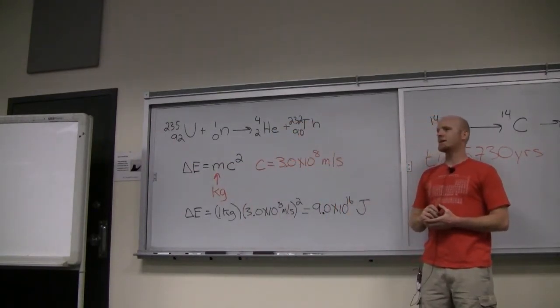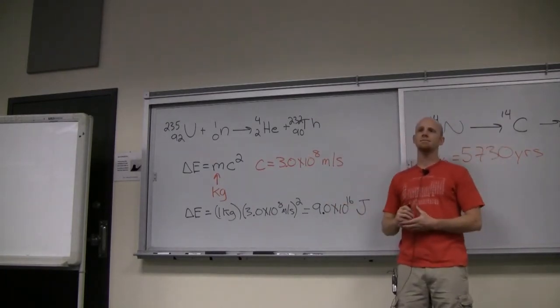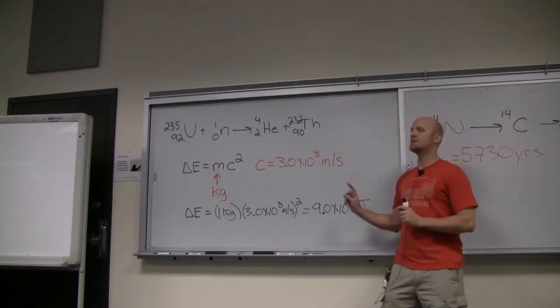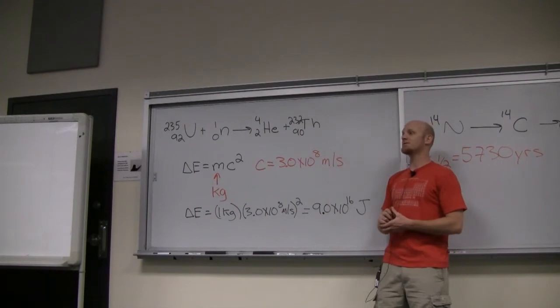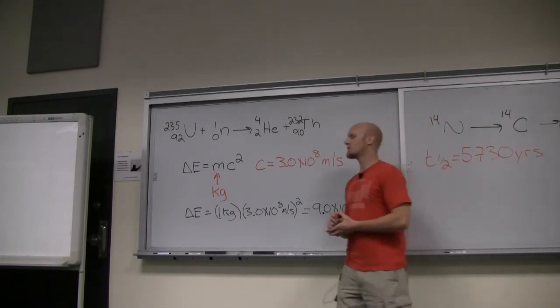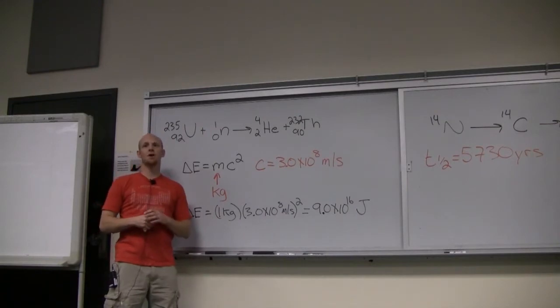So what Einstein figured out is that matter and energy are not two distinct things. They're just different manifestations of the same thing, and so they can be converted one into the other. This is what nuclear reactions do. They convert mass into energy. If you recall, we said that all nuclear reactions lose mass. All of them.